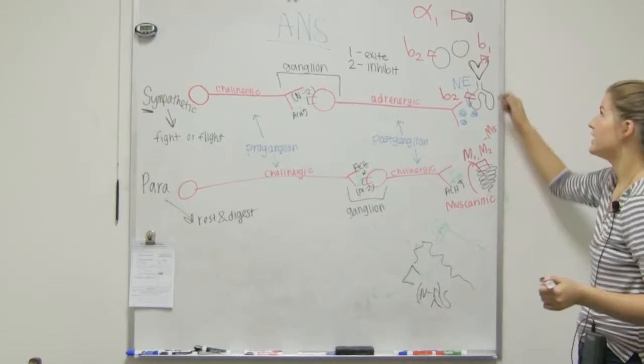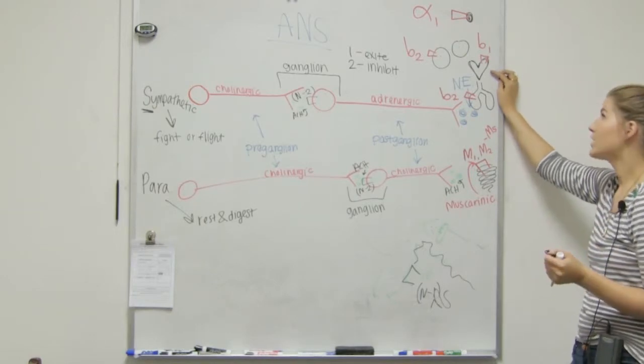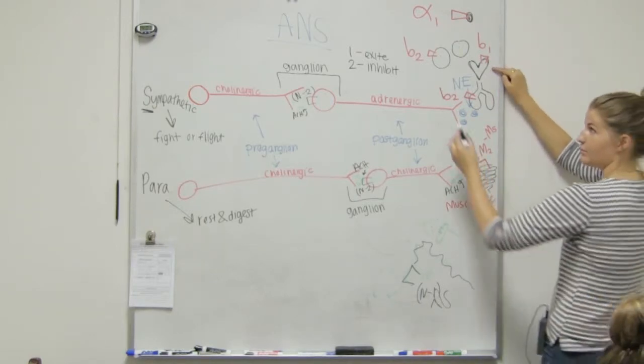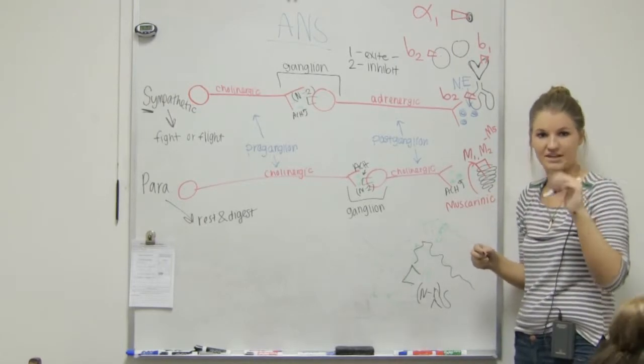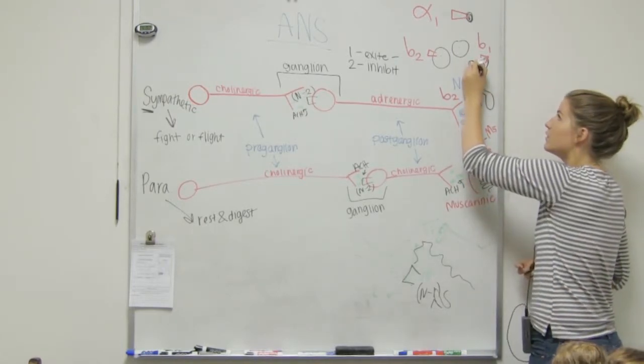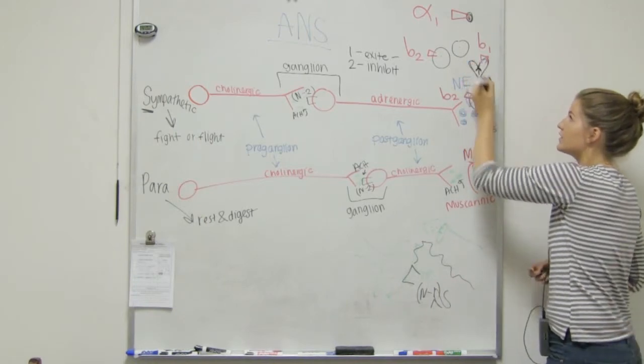So, alpha 1, let's say someone comes in here with a gun. We're going to want to excite our heart, which is why it's a 1. So, then our heart will start beating faster and faster and faster and increase our heart rate.